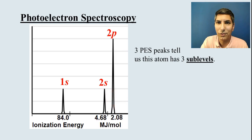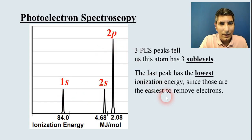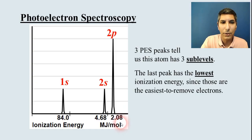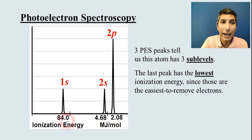If you can write an electron configuration like we did in the last video, then you can interpret a photoelectron spectroscopy graph — it's basically the same thing. You just go from left to right: 1s, 2s, 2p. The last peak, labeled 2.08, is telling us about the first or lowest ionization energy. Those are the easiest electrons to remove — it only takes 2.08 megajoules per mole to take those electrons away, whereas in the 1s sub-level, that would take 84.0 megajoules per mole, a whole lot more.